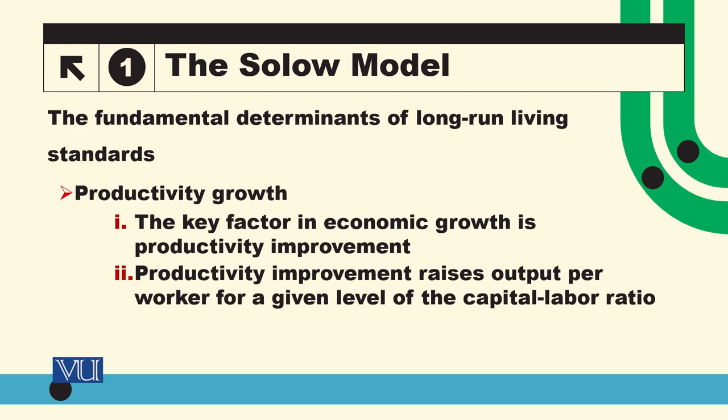Productivity growth is the key factor in economic growth. Productivity improvement means that for a given level of inputs, we can produce more output. We are using the intensive form of the production function — k and small y, small k. Productivity improvement means that for a given value of k, now we can produce more y, so the production function will shift upward.